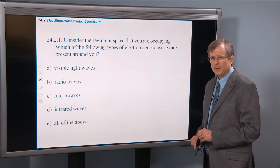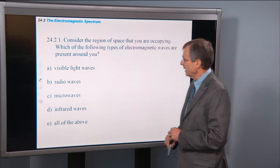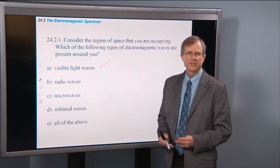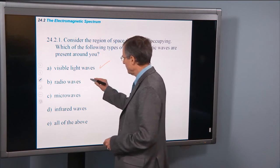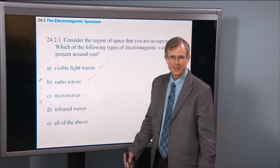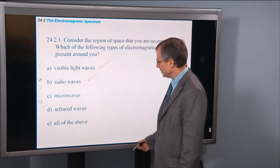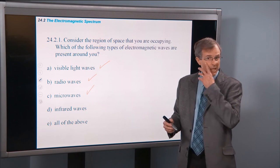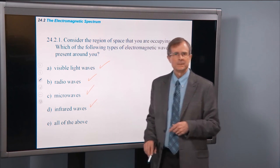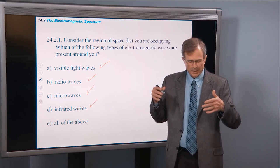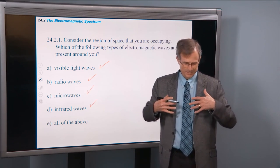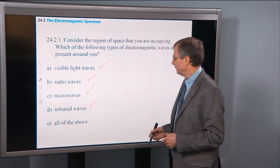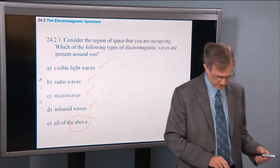Consider the region of space that you're occupying. Which of the following types of electromagnetic waves are present around you? Visible light waves. I would imagine that the lights are not off. What about radio waves? If you stick a transistor radio right here, will you hear it? Yeah, sure you will. So there's radio waves. Microwaves are actually present, leaking out from the microwave oven. They're used in radio communications as well. Infrared waves, that's heat. Your body produces some infrared radiation that propagates out, because your body is at a particular temperature. We'll talk about that more later. And so it's actually all of the above. You've got all these propagating around.